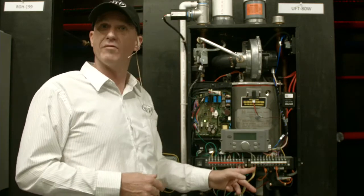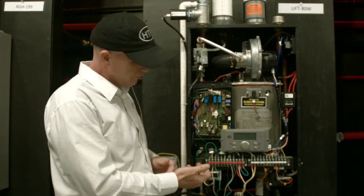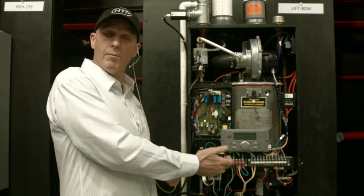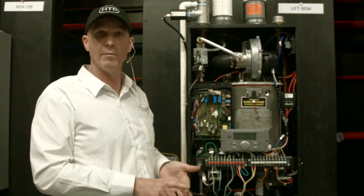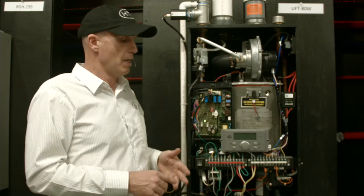And then it has the low water cutoff, which is the switch side of the safety. As you move over to the line voltage side, we have our incoming power, three pump outputs. We can control a boiler pump, a system pump, and a domestic hot water pump.